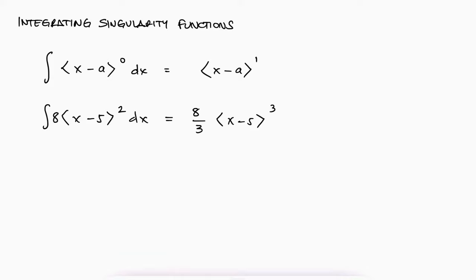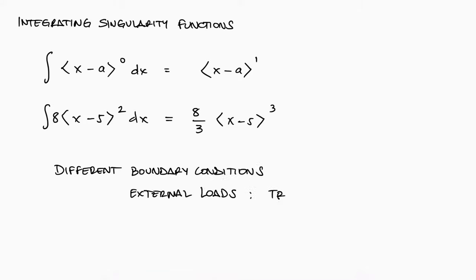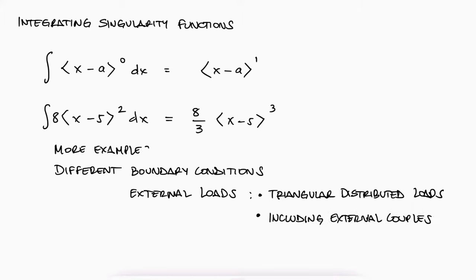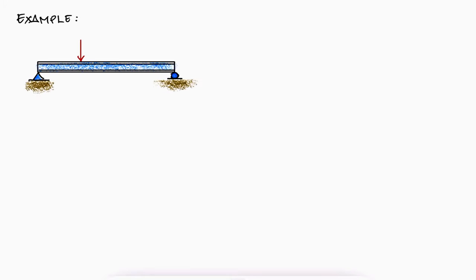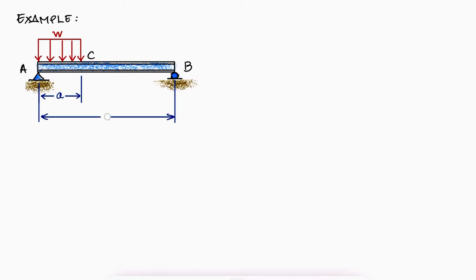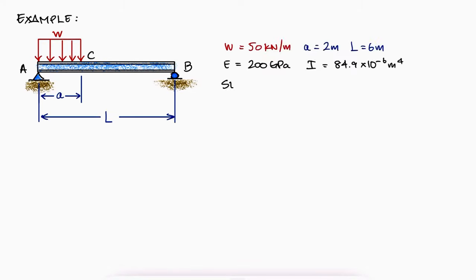Let's put everything we've learned to use with a simple example. For more examples with different boundary conditions and different external loads, including triangular distributed loads and external couples, make sure to check out the links to the short example videos in the description below. For the beam and loading shown, knowing the values for the elastic modulus and second moment of area, what is the slope of the beam at support A and what is the deflection of the beam at C? Remember to try this problem on your own before continuing to watch the solution.